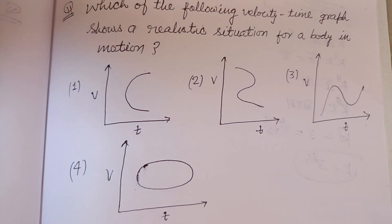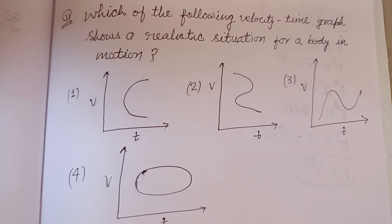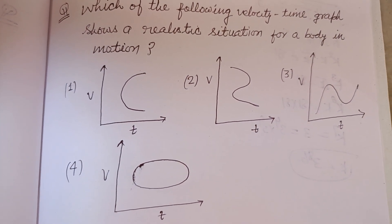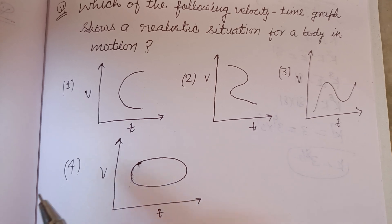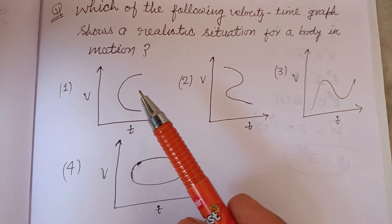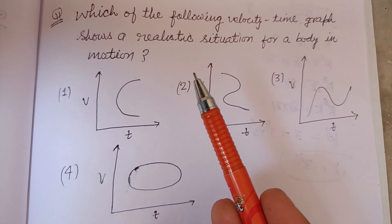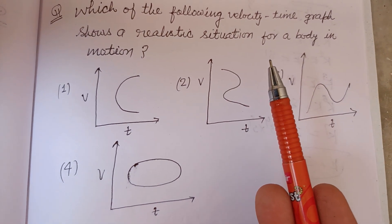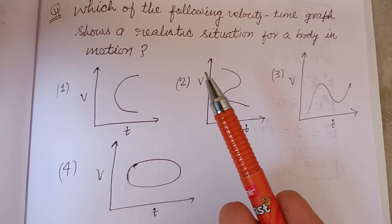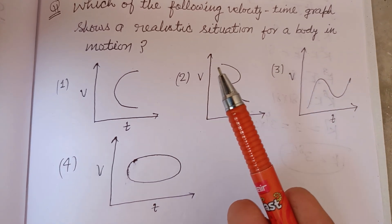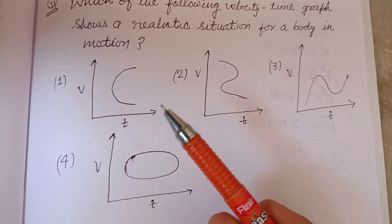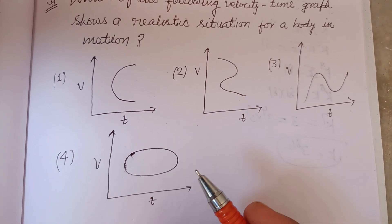Hello viewers, warm welcome to this YouTube channel. The question is: which of the following velocity-time graphs shows a realistic situation for a body in motion?